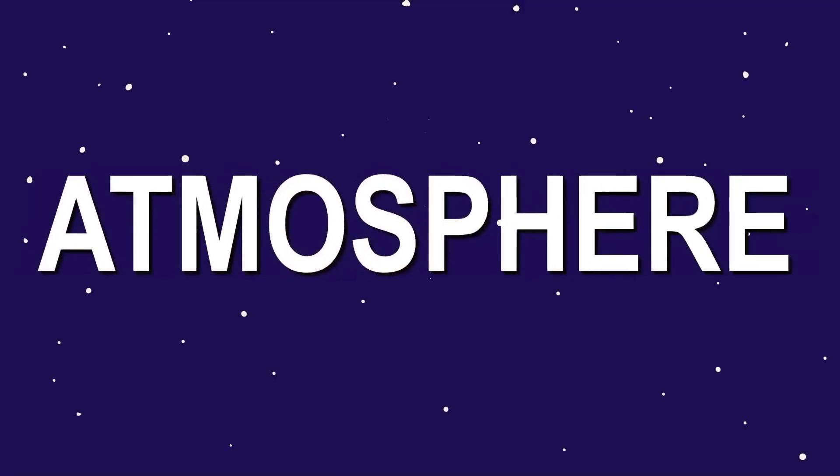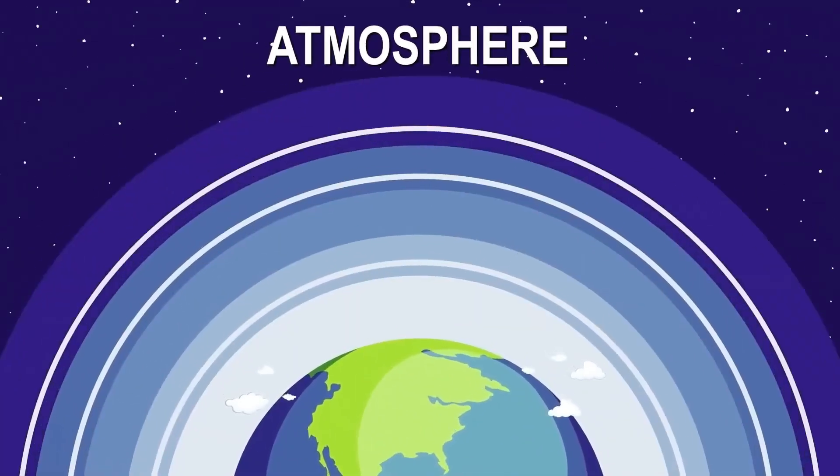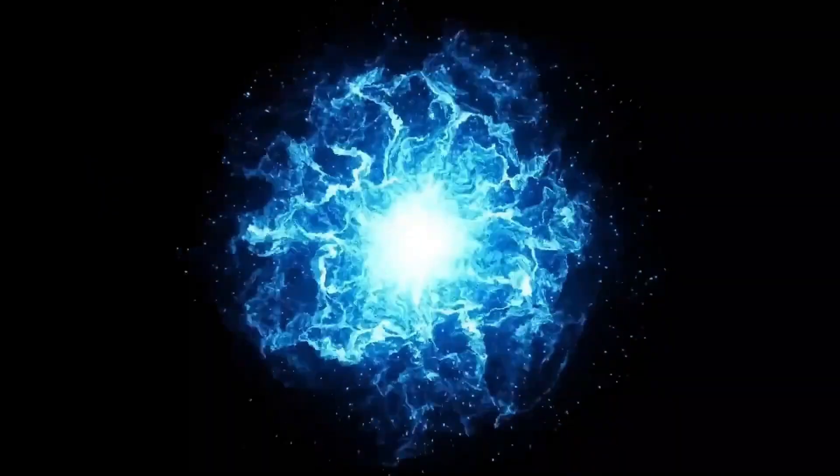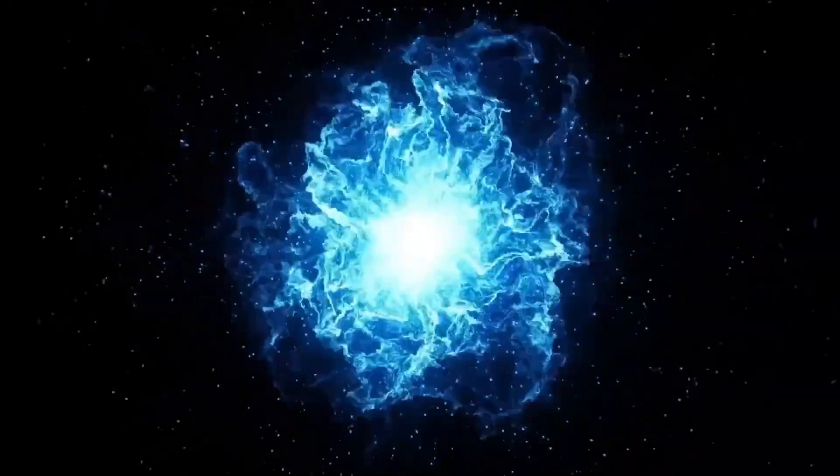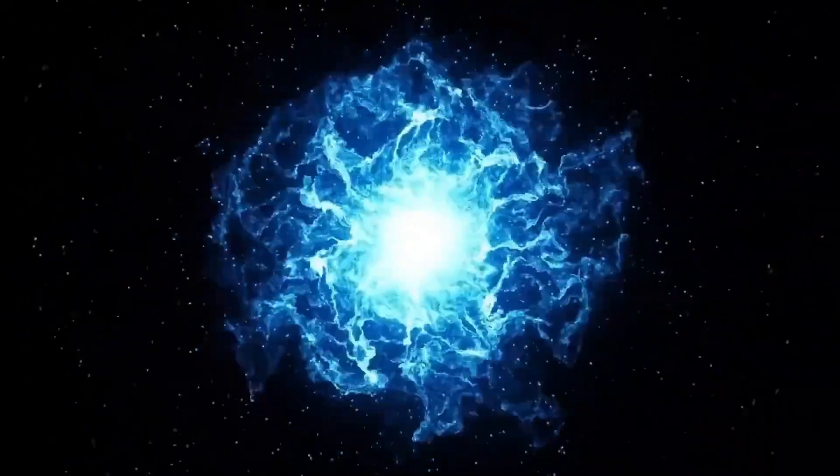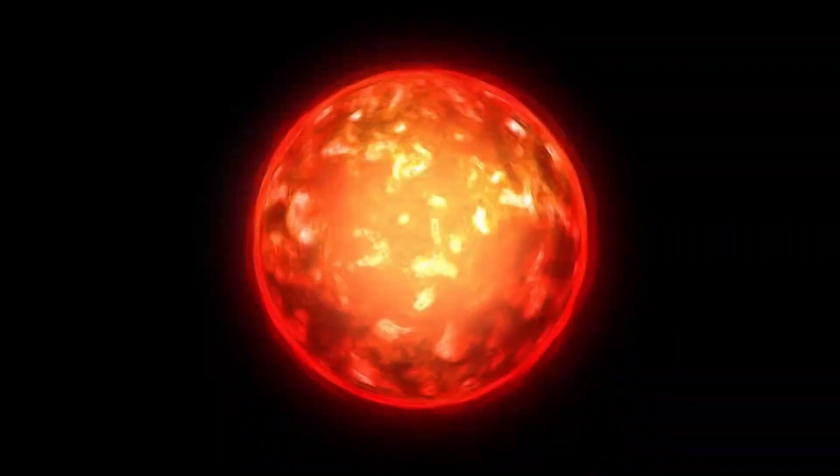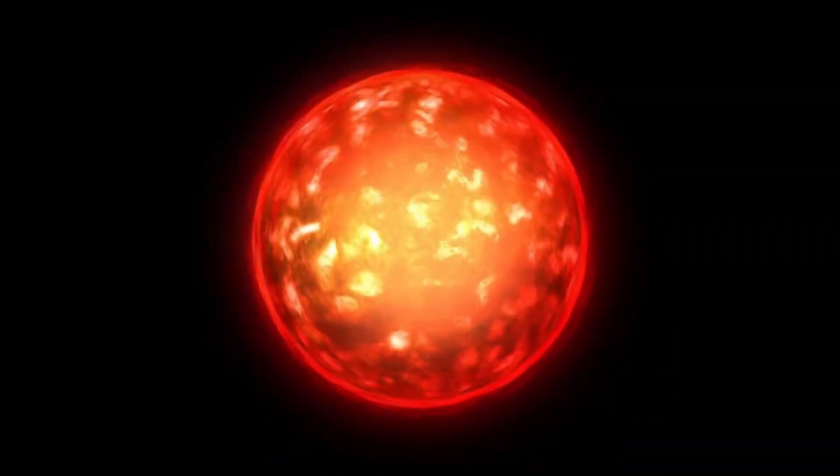Its luminosity is equally staggering, shining over 10,000 times brighter than the sun. But what makes Betelgeuse truly fascinating isn't just its size or brightness. It's the fact that it's a star in its twilight years. As a red supergiant, Betelgeuse is in the final stages of its life cycle, a phase where massive stars become unstable, their interiors roiling with turbulent forces.